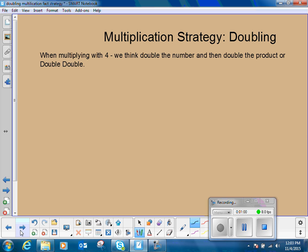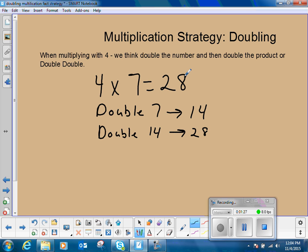So we're going to take four times seven, four groups of seven. We think double seven. We know that is 14. And now we double our 14. We know that is 28. So double-double, four times seven is equal to 28.